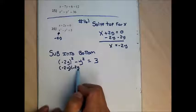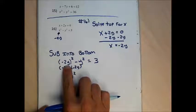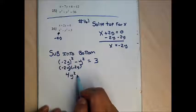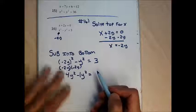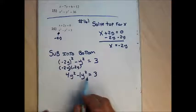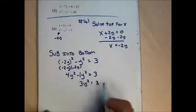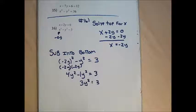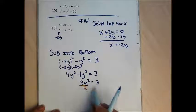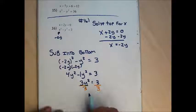Substituting x = −2y into the bottom equation: (−2y)² − y² = 3. Since (−2y)² = 4y², I get 4y² − y² = 3, which simplifies to 3y² = 3. Dividing both sides by 3 gives y² = 1. I can solve this by square rooting (remembering ± ): y = ±1, giving y = 1 and y = −1. Alternatively, factoring y² − 1 = 0 gives (y + 1)(y − 1) = 0, which also yields y = 1 and y = −1.